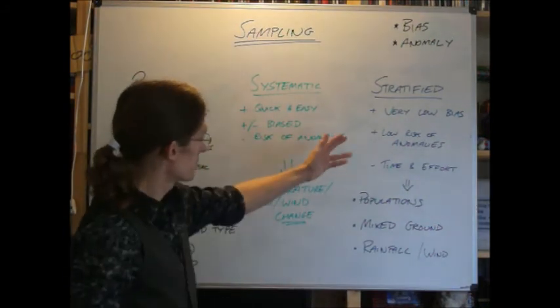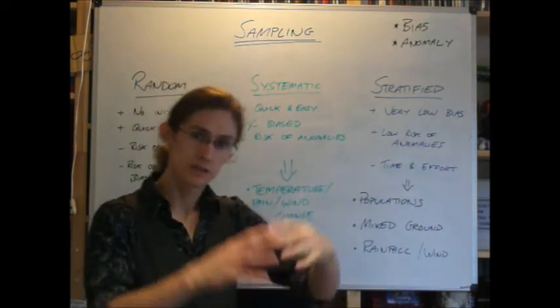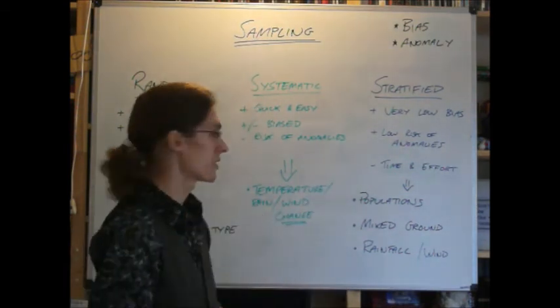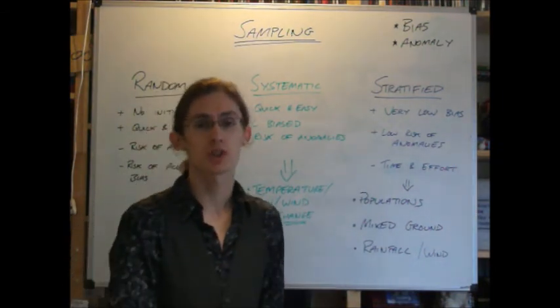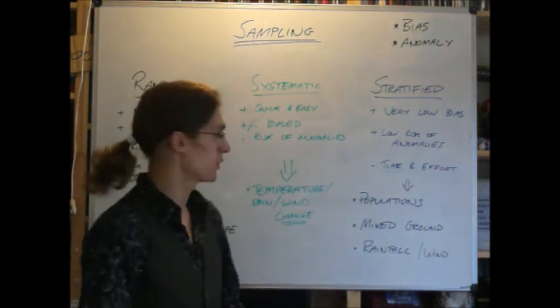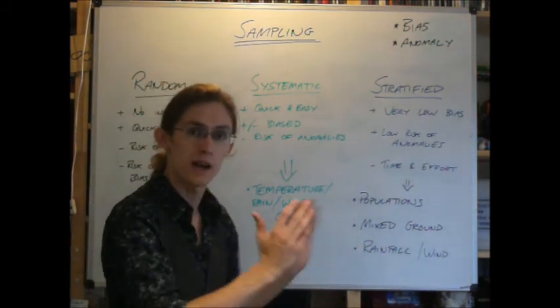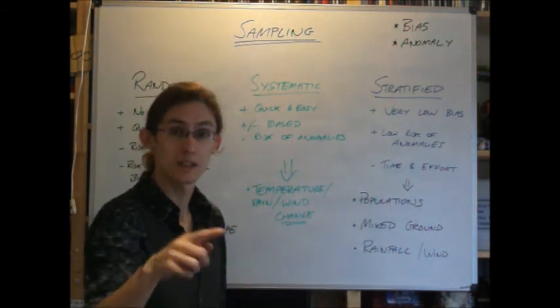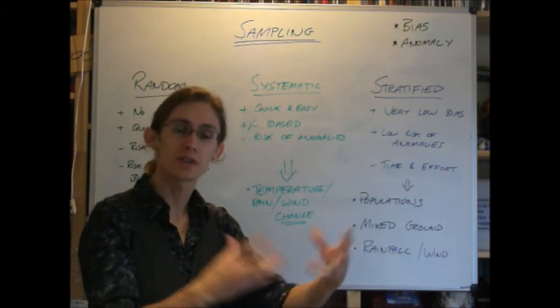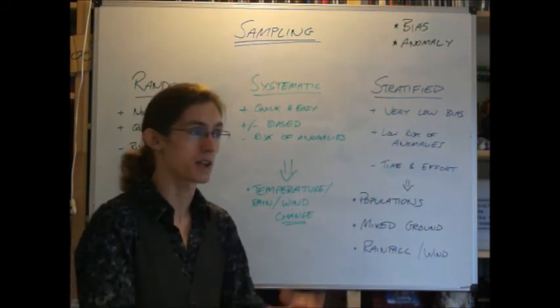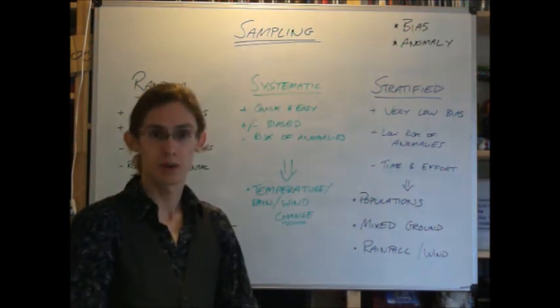Stratified sample is the one that we'll probably use the most. It's good for taking populations. So if you're looking at different streets, different houses, and you're giving them a questionnaire, really useful. If you've got a mixed type of ground, it's good, because you can divide up the ground and then randomly sample within it. It's also good for rainfall and wind, because you might want to take certain areas out of your sample. Like a building, you might not be able to get onto the roof. So you can't use that.